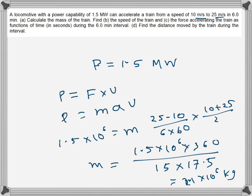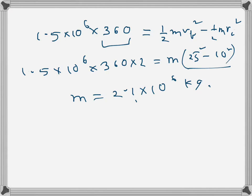Next, we need to find the speed of the train and the force accelerating the train as functions of time. To find velocity as a function of time, we use the same work-energy expression but instead of the full 360 seconds, we write any time t within that 6-minute interval.